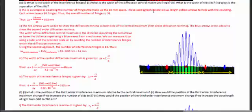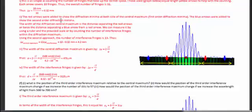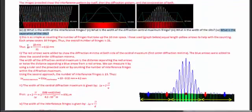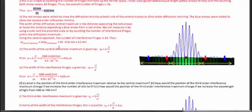Part four asks for the separation of the slits. Separation of slits relates to interference — whenever we have two slits, we talk about interference; whenever we have a single slit or slit width, we talk about diffraction. The interference fringe width was found to be 0.32 millimeters. Using the expression Δy = λL/d and solving for d gives us the slit separation.